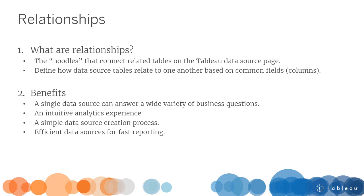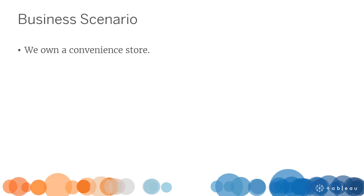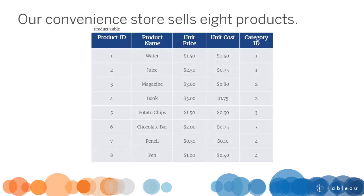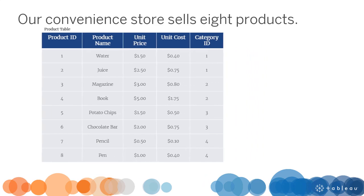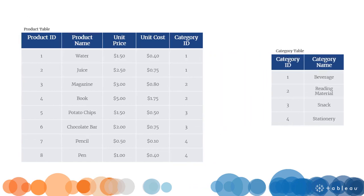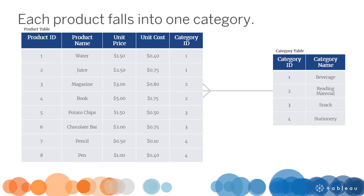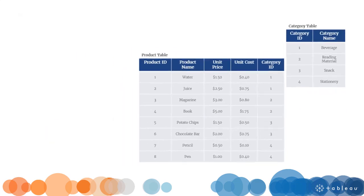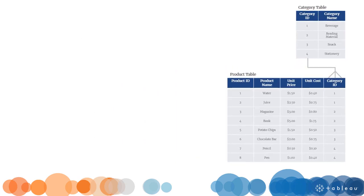Before jumping into Tableau Desktop, let's familiarize ourselves with our business scenario. We own a convenience store, and we want to analyze our transaction data to answer business questions. Our convenience store sells eight products. Each product has a unique product ID, a product name, unit price, and unit cost. Each product falls into one category, and each category has many products. The line between the tables signifies this one-to-many relationship. The two tables relate based on a common field, category ID.